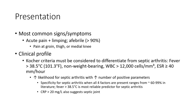The most common signs and symptoms are acute hip pain and limb pain. More than 90% present with unilateral pain. The Kocher clinical criteria must be considered to differentiate from septic arthritis: fever more than 38.5°C, non-weight bearing, white blood cell count more than 12,000, and ESR more than or equal to 40.